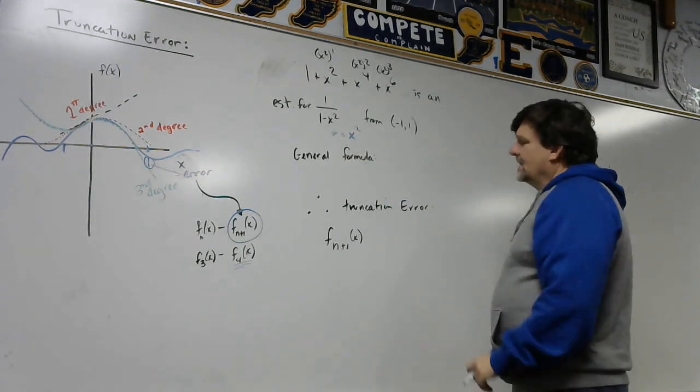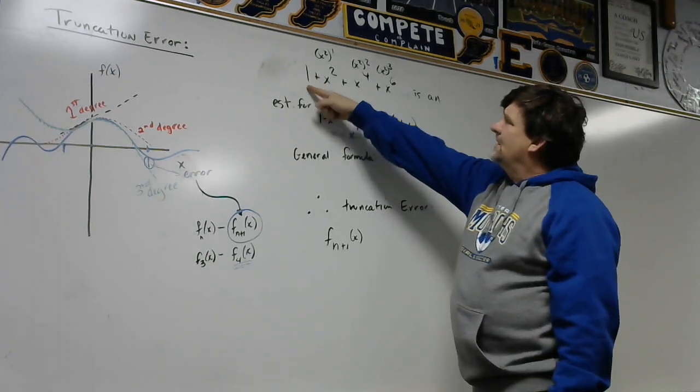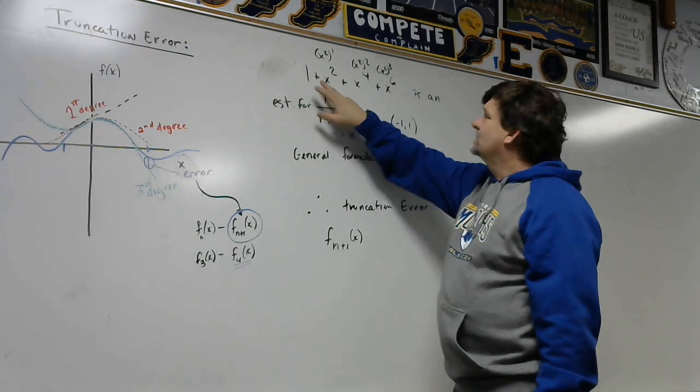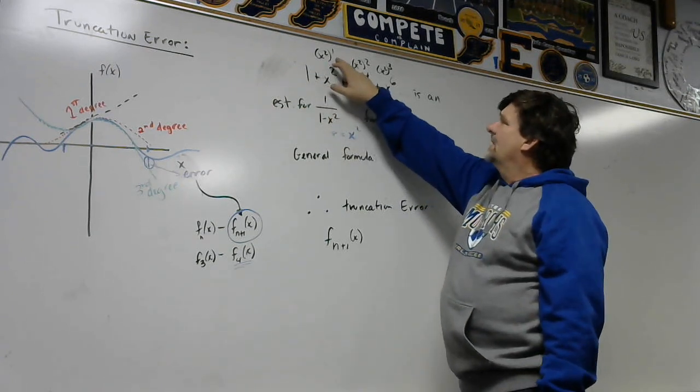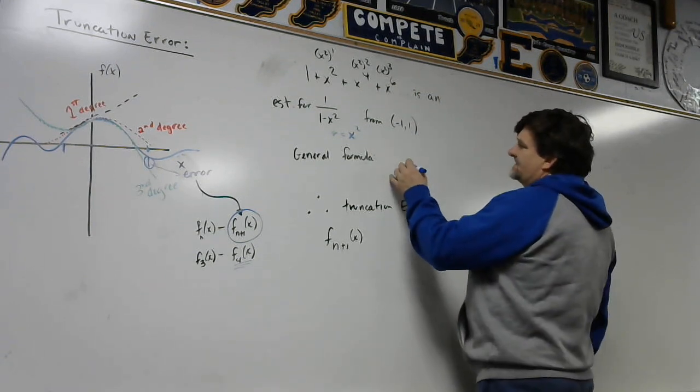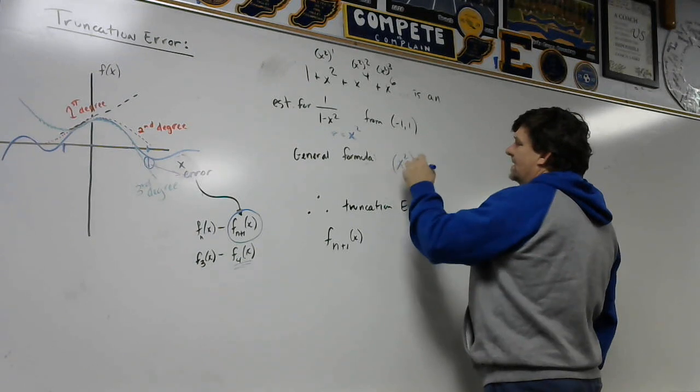So if we look at the general formula, we've got one, and this will be x, x squared to the zero power which gives us one, this is going to be x squared to the one, x squared to the two. So we're really looking at this idea that the general formula is x squared to the n power.